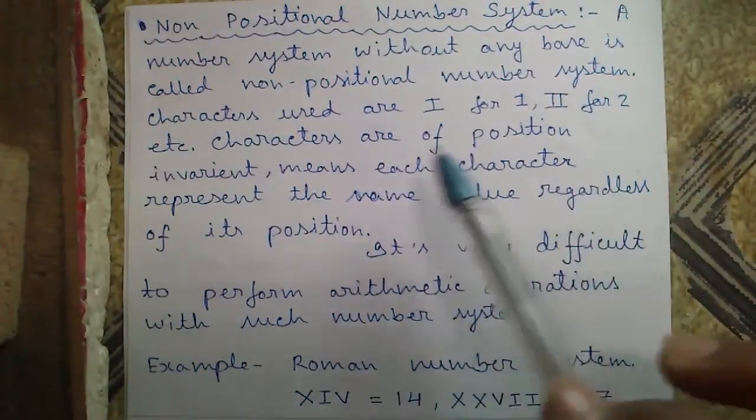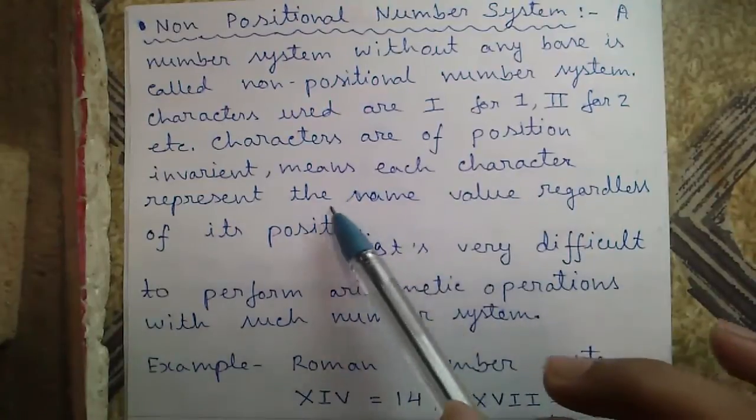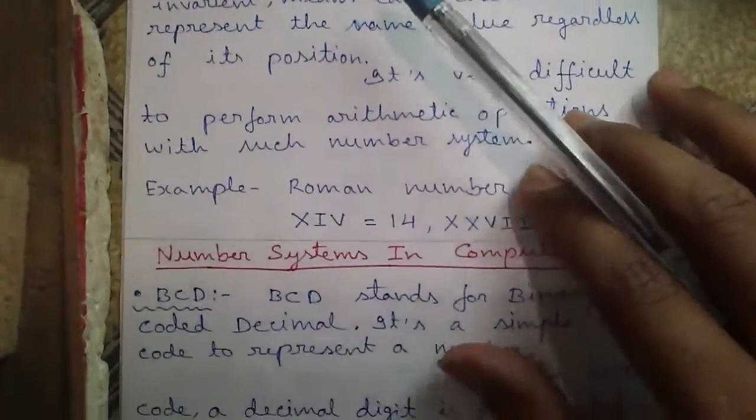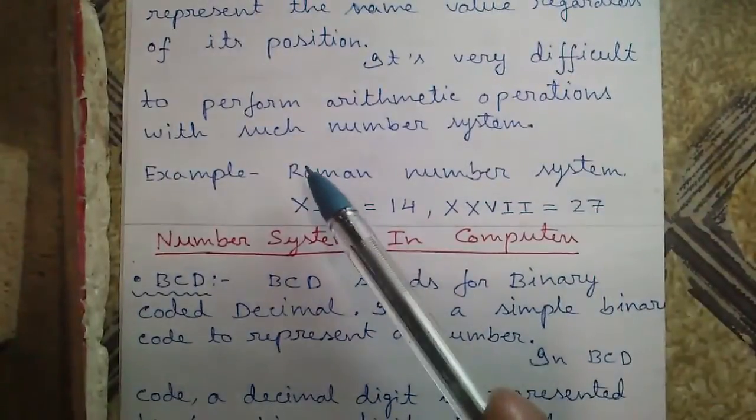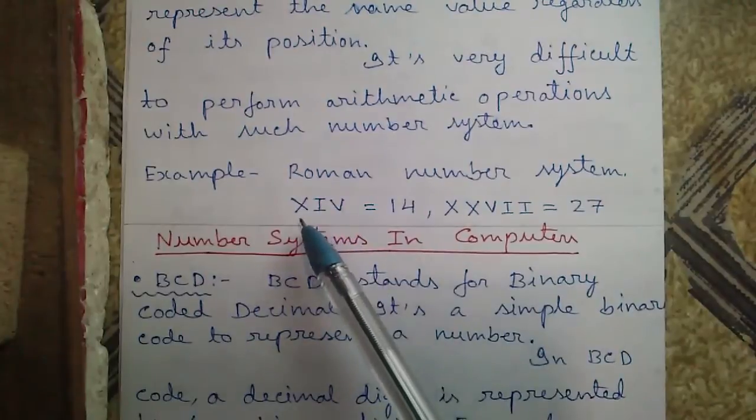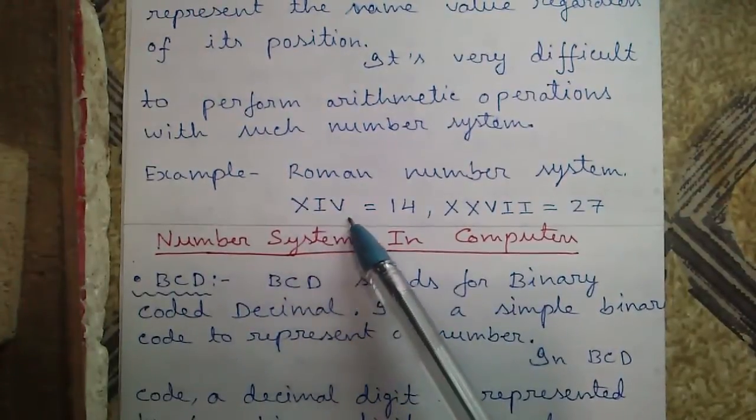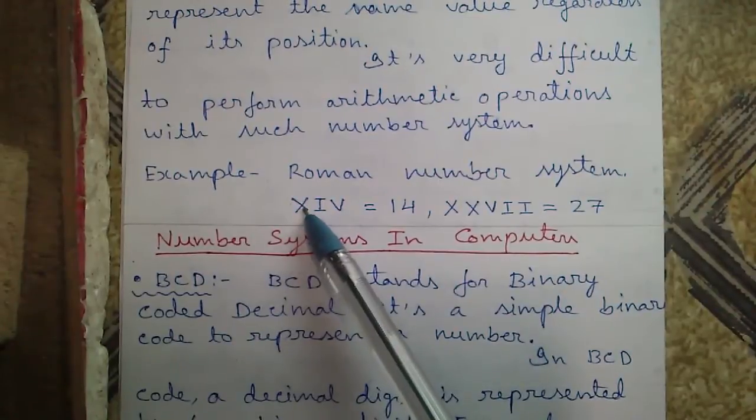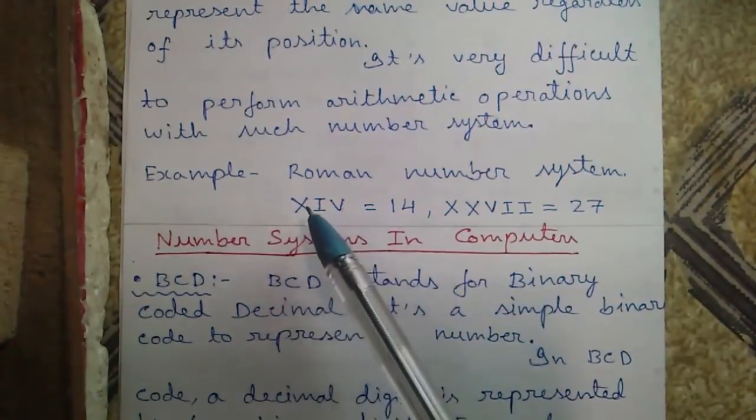Characters are of position invariant, means each character represents the same value regardless of its position. It is very difficult to perform arithmetic operations with such number system. For example, Roman number system. This is X or 10, this is I, this is V. So it doesn't matter whether this X is positioned here or here, it will always represent 10.